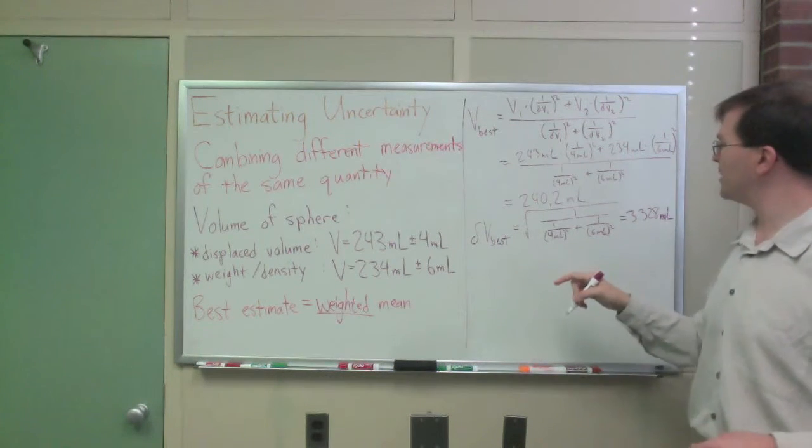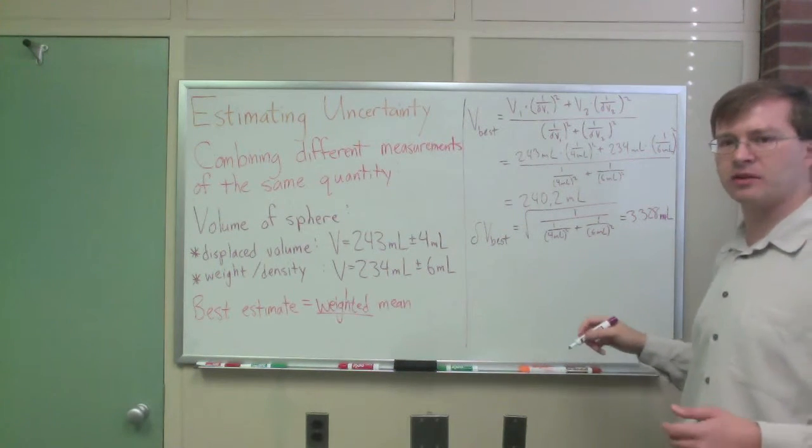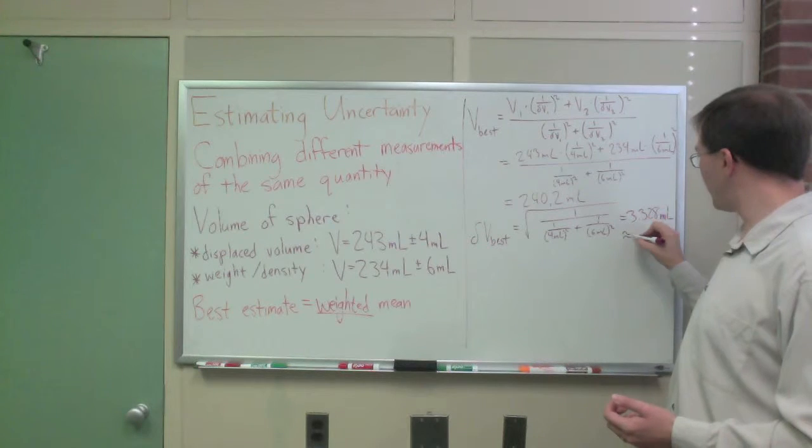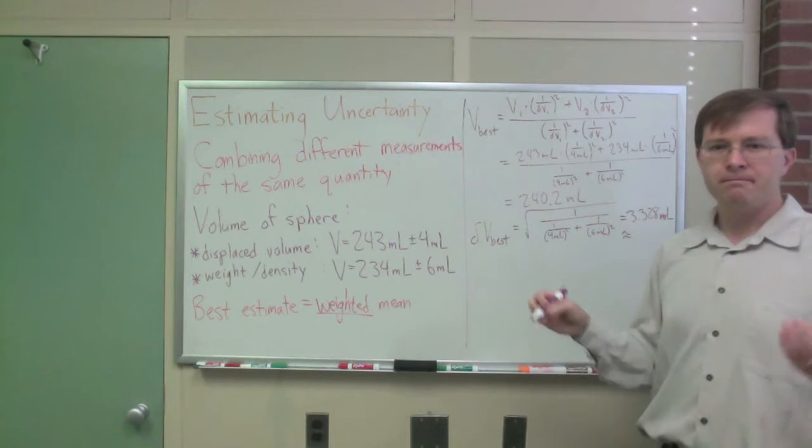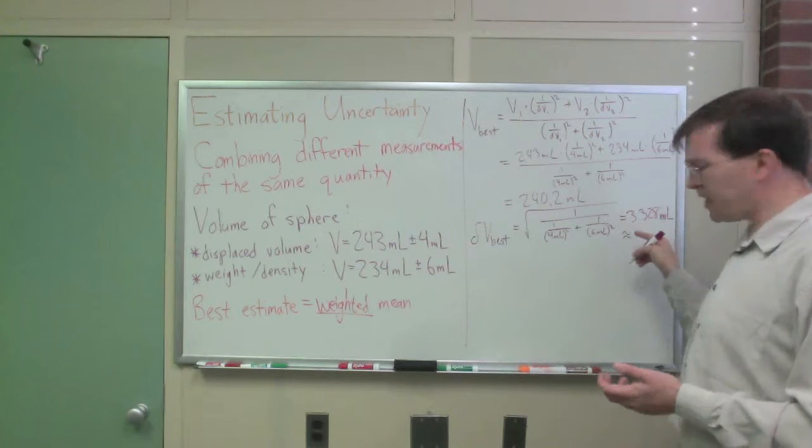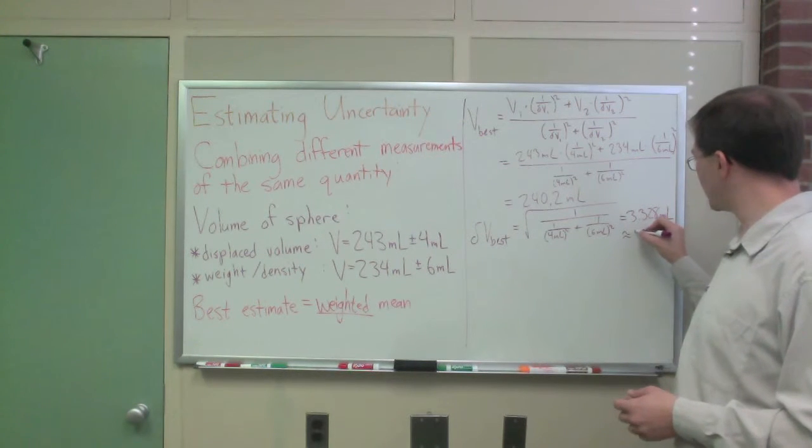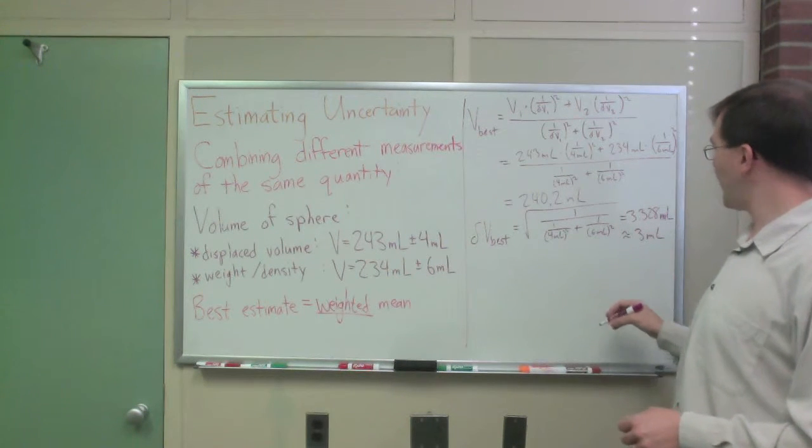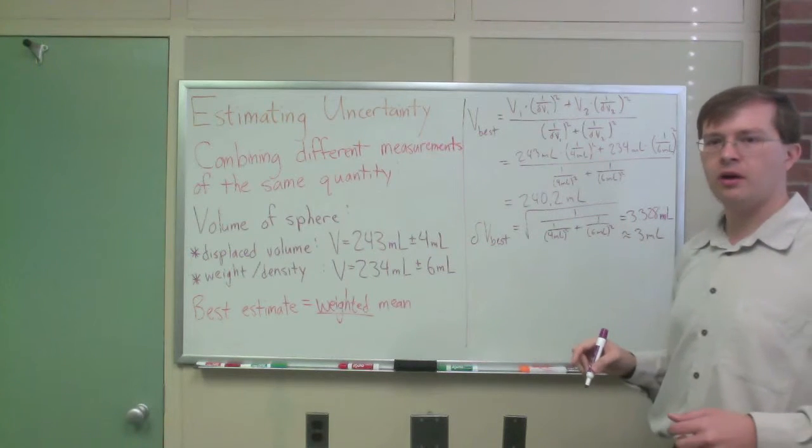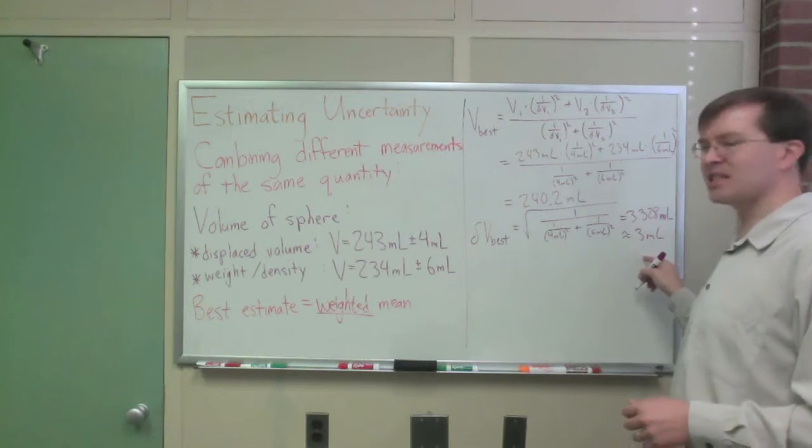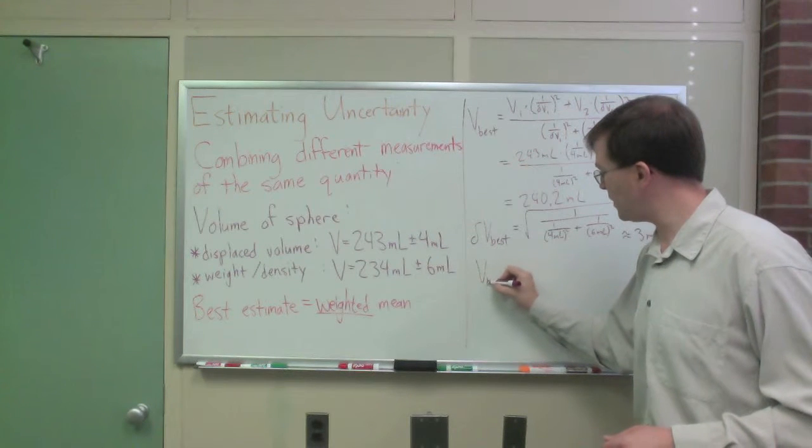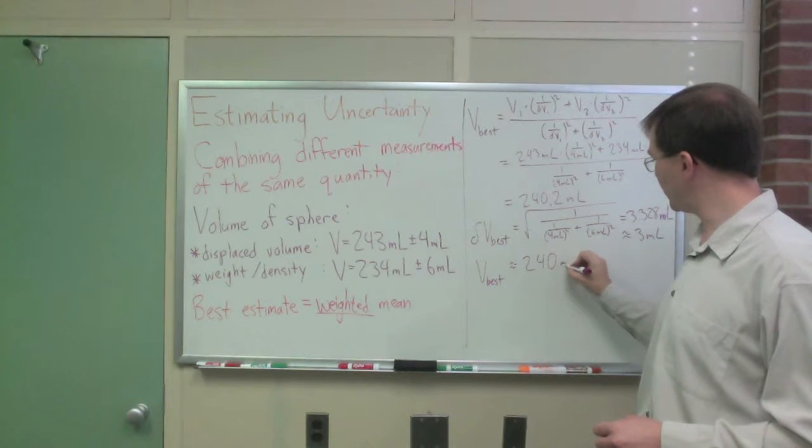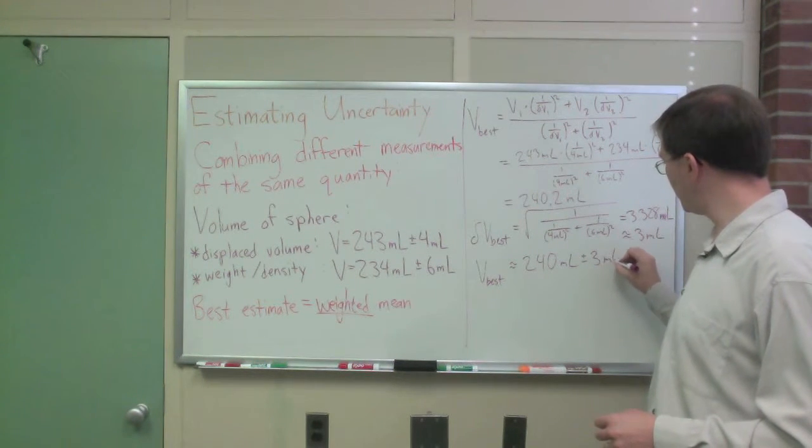That's milliliters. You can check that the units are right in both of these, that these come out, that the units come out nicely to milliliters. So, I usually round my uncertainties to usually just one sig fig. For three, I sometimes round to two sig figs, but I'll go ahead and call this just three milliliters, round it off to just one sig fig. That's usually the best thing to do there. And then, I want to round my value off to match the last sig fig here. So, I report my V. V best is equal to 240 milliliters plus or minus 3 milliliters.